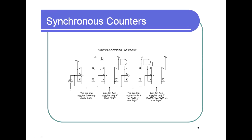In a 4-bit synchronous up counter, the first flip-flop toggles on every pulse. The second flip-flop toggles only if Q0 is high. The third flip-flop toggles only if both Q0 and Q1 are high. The fourth flip-flop toggles only if Q0 and Q2 are high.